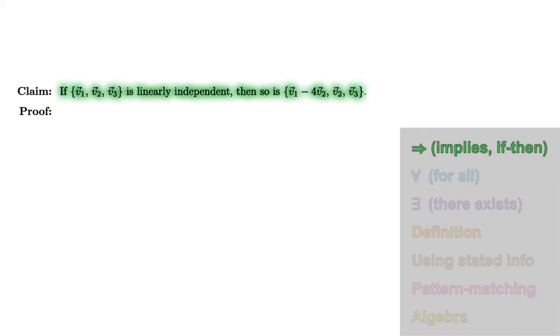The statement we're proving is an if-then or implies statement. To prove such a statement directly, we'll suppose the hypothesis in our proof, and we'll need to deduce the conclusion, giving us a new target.